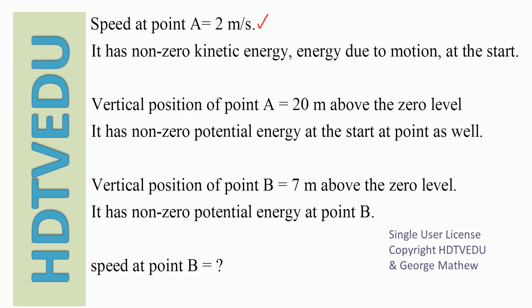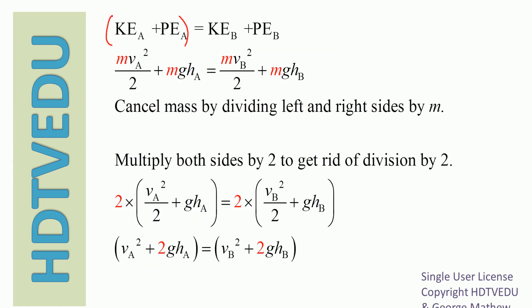Speed at A is 2 meters per second, so it has non-zero kinetic energy at the start. Vertical position of point A is 20 meters above the zero level, so it has non-zero potential energy as well. Vertical position of point B is 7 meters above the zero level, so it also has non-zero potential energy at point B. Kinetic energy at A plus potential energy at A equals kinetic energy at B plus potential energy at B. The expression for kinetic energy is one-half mv squared; potential energy is mg times height.